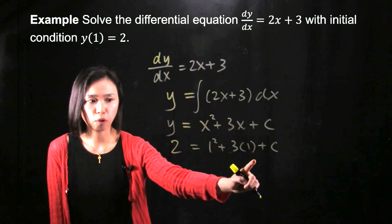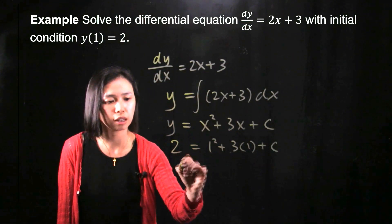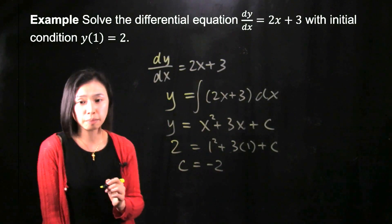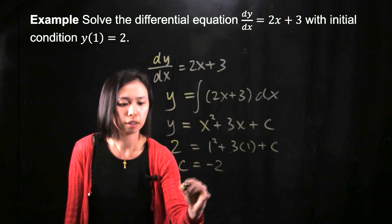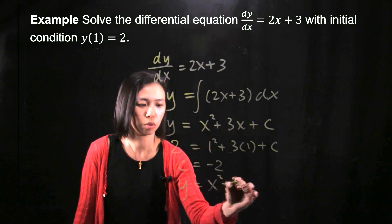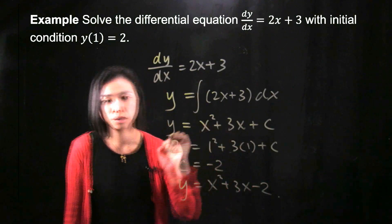All right. This adds up to 4. This is 2. So C is negative 2. And then remember that we still haven't finished. You need to substitute this negative 2 back. Then you will get y equals x squared plus 3x minus 2. All right.